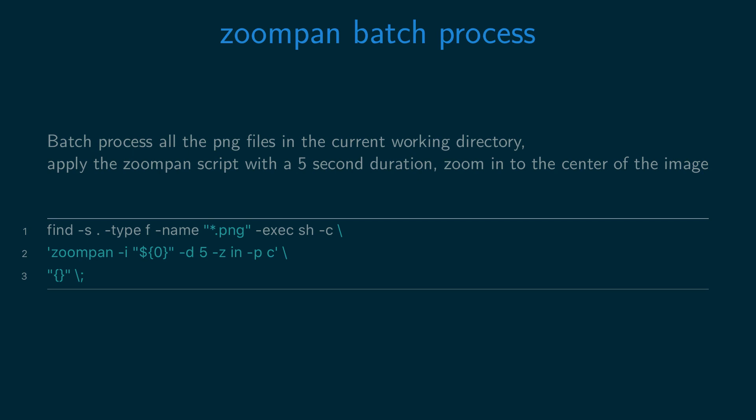You can batch process all the image files in the current directory with the zoom pan script to apply the Ken Burns effect to the image. In this example we'll find all the PNG files and then set a duration of 5 seconds and then zoom into the center of the image.